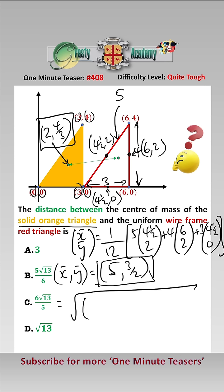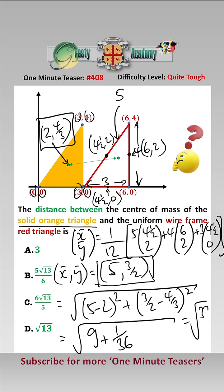And the distance between them is the square root of 5 take away 2 squared plus 3 over 2 take away 4 over 3 squared. And that equals the square root of 9 add 1 over 36, which equals the square root of 6, which equals 5 root 13 over 6, which is answer B.